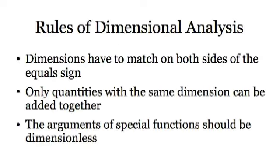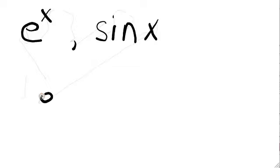The third rule is that the arguments of special functions should be dimensionless. Special functions means e to the x, or sin of x, or anything like that. And when you have a function like this, x must be dimensionless. And there's a very simple reason.